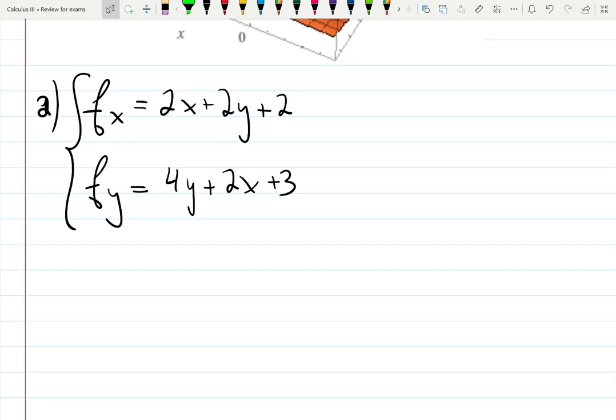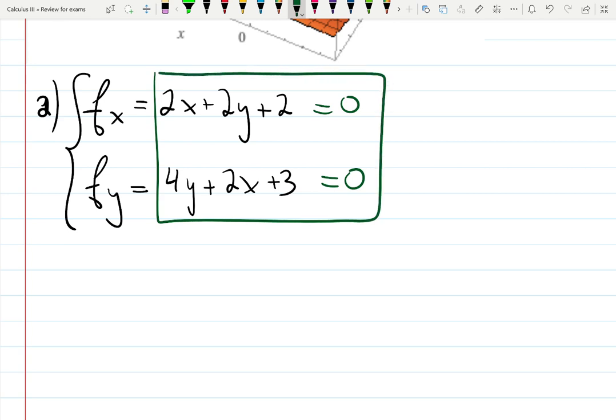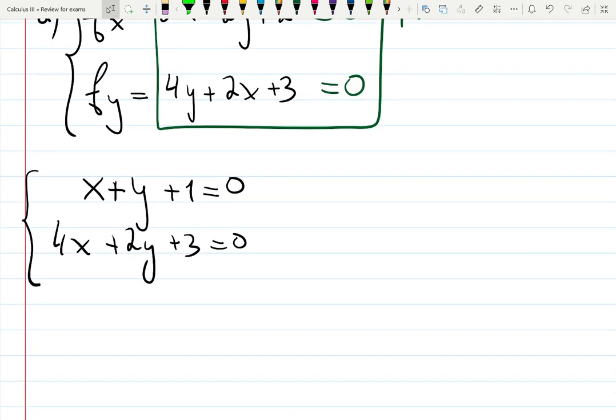Now we want to find critical points, so we will set both equals to zero and solve this system. I will divide this one by two, then I will have x plus y plus 1 equals 0, and 4x plus 2y plus 3 equals 0. I could solve for one and then plug it into the other one.